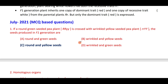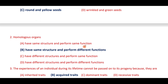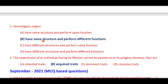If a round green seeded pea plant is crossed with a wrinkled yellow seeded pea plant, the seeds produced in the F1 generation will be round because they are dominant. Homologous organs have the same structure but perform different functions.